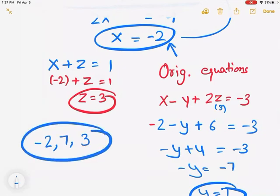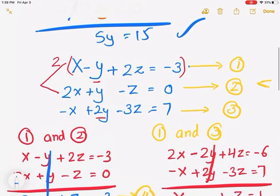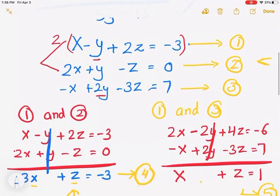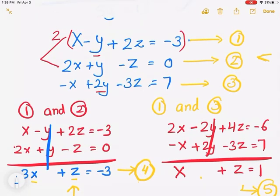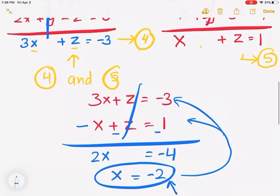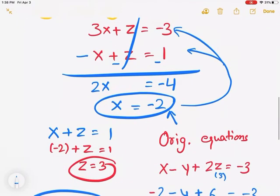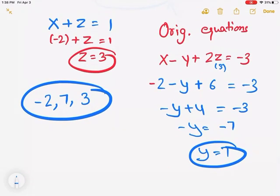So that's how we do it. To recap: pick a combination to eliminate one variable — I picked equations 1 and 2 to eliminate y's. Then go back to the originals, pick a different combination, and eliminate the same variable — I picked equations 1 and 3, multiplying by 2. Combine the new equations 4 and 5 to get your first answer. Then use the two-variable equation to solve for the second, and the original equation to solve for the last variable.